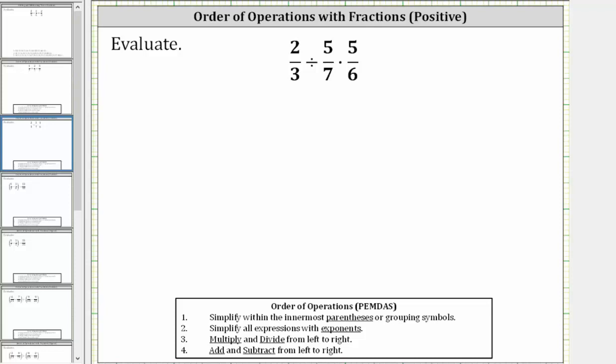We want to evaluate or simplify the given expression. Notice how we have division as well as multiplication. And since multiplication and division have the same priority in order of operations, we simplify the expression from left to right, which means the first step is to determine this quotient.